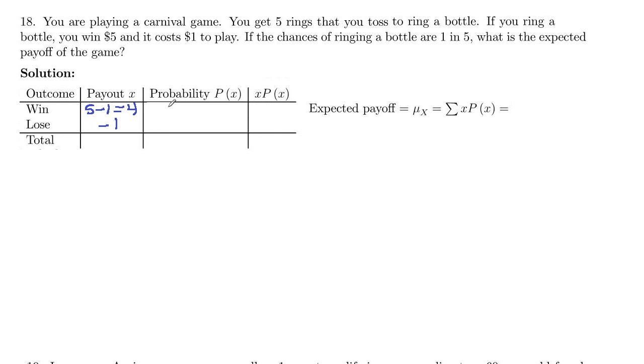Now probability. You've got a one in five chance of ringing a bottle, so one-fifth is 0.2. The probability of a win is 0.2, and the probability of a loss is 0.8—20 percent and 80 percent. They have to total up to one.